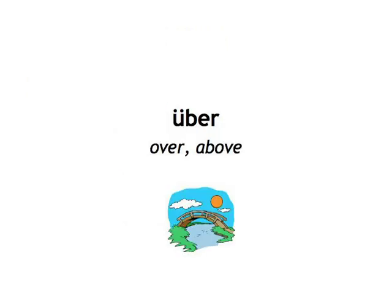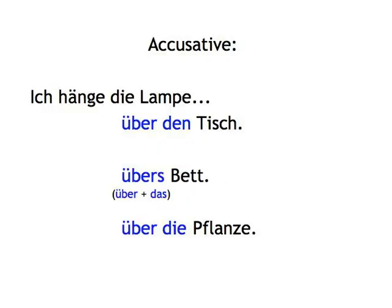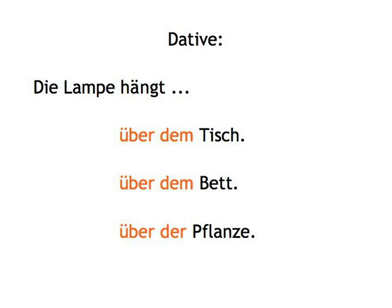Über, meaning over or above. In the accusative — remember the movie camera. Ich hänge die Lampe über den Tisch — I'm hanging the light fitting above the table. Ich hänge die Lampe übers Bett — I hang the light above the bed. Ich hänge die Lampe über die Pflanze — I hang the light over the plant. In the dative — remember the photo. Die Lampe hängt über dem Tisch — the light hangs over the table. Die Lampe hängt über dem Bett. Die Lampe hängt über der Pflanze — the light hangs over the plant.